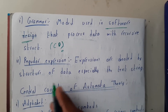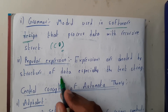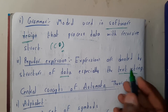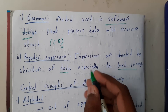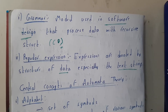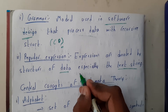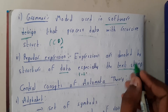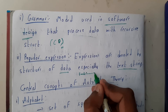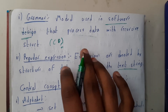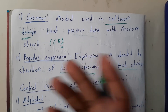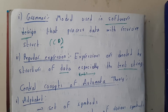Regular expressions denote data, especially in text strings — writing in terms of words. Everyone knows about sets, where we write things like 'S belongs to S'. Similarly, we can represent things in terms of alphabets and everything using regular expressions.